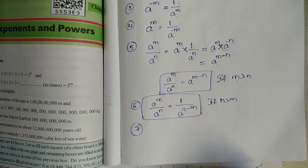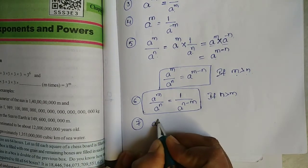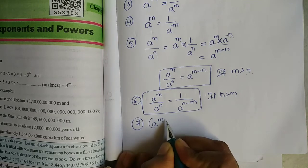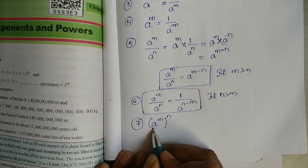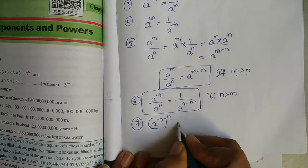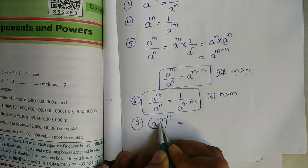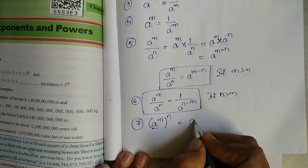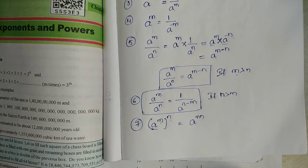The seventh formula: a to the power of m, whole to the power of n, equals a to the power of m into n — that means m multiplied by n.